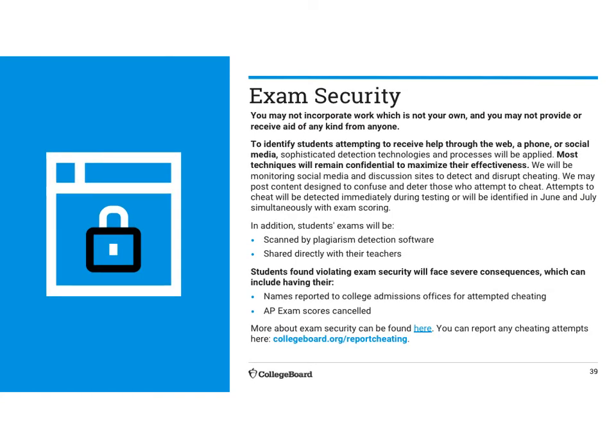Exam security: they've got pretty sophisticated methods for checking if you're cheating. It's going to be difficult to cheat in a 50-minute session. They have very clear algorithms developed to detect it, especially if people are using the same wording. Students found violating the policy will have their names reported to college admissions and their AP exam scores canceled. They're going to put a black mark on you if you cheat. Don't cheat.